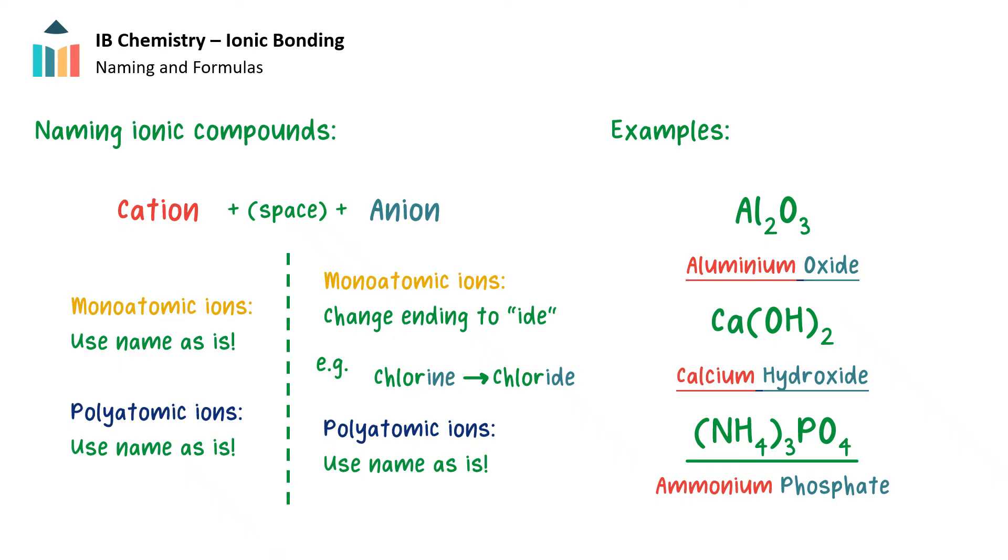And finally, we have (NH4)3PO4. This is a compound where both the ions are polyatomic, so both ions keep their names, making ammonium phosphate the correct name for this compound.